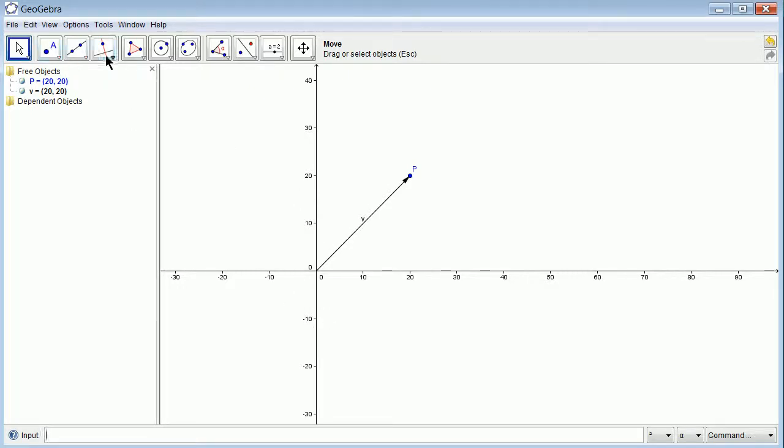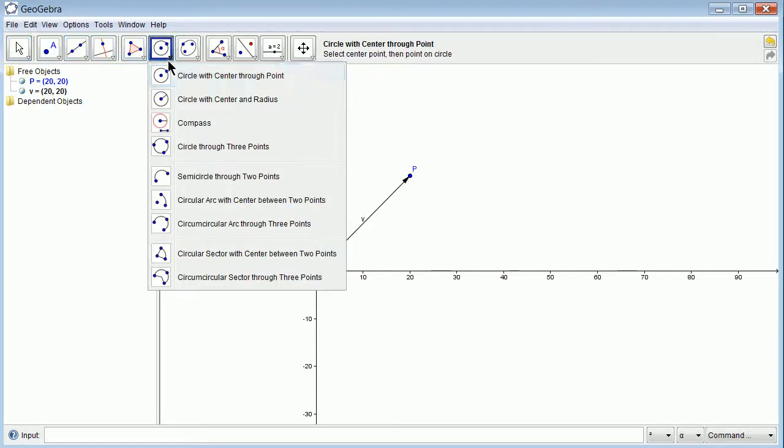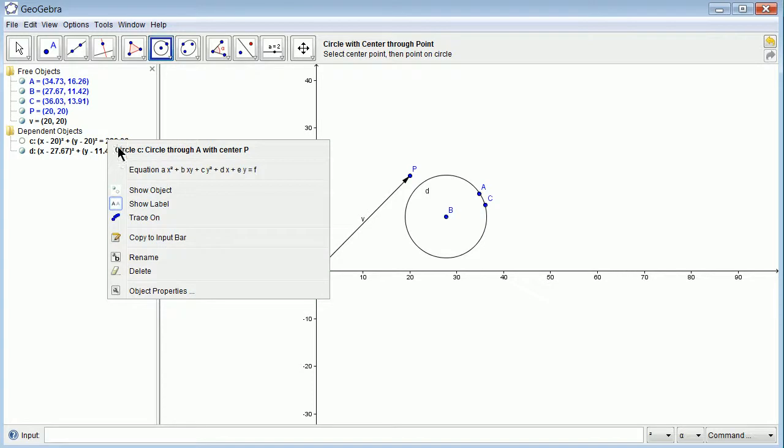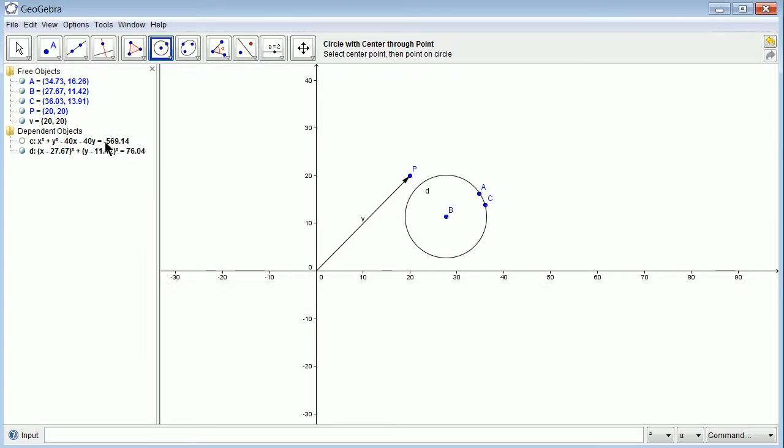It has the ability here to draft things like circles. Circle through center through point, we're going to go through that point and immediately it shows you the equation over here. As you click over here, you're able to change the format of the equation. You can change the equation to standard format or to the center H and K format. This is an incredibly powerful tool.